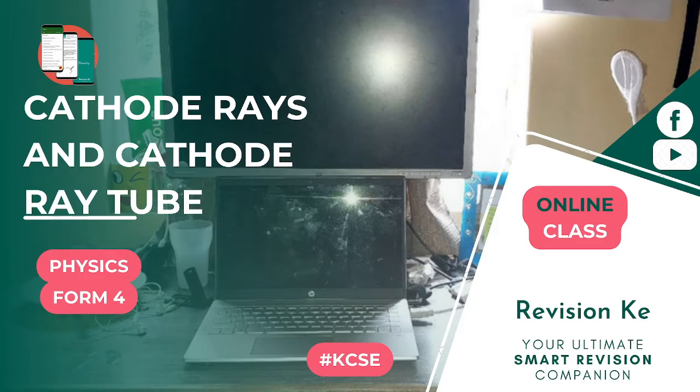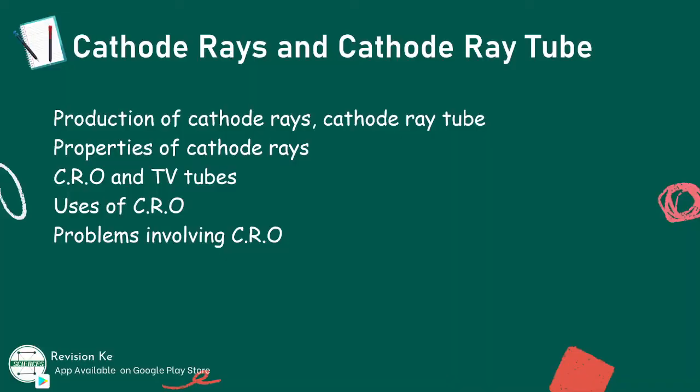By the end of this topic, you the learner should be able to describe the production of cathode rays, state the properties of cathode rays, explain the functioning of a cathode ray oscilloscope and a television tube, explain the uses of a cathode ray oscilloscope, and finally solve problems involving cathode ray oscilloscope.